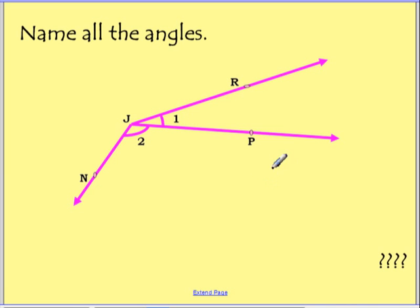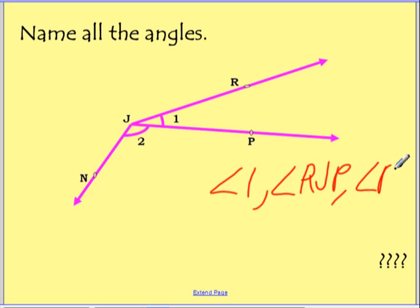Okay. So you could name angle 1, which could also have been called angle RJP or angle PJR. So that's one of them. That's angle 1.